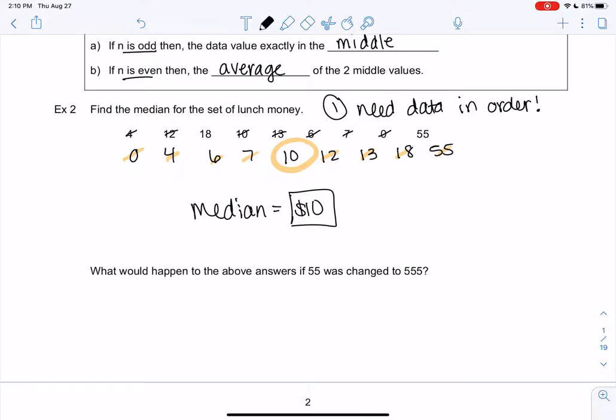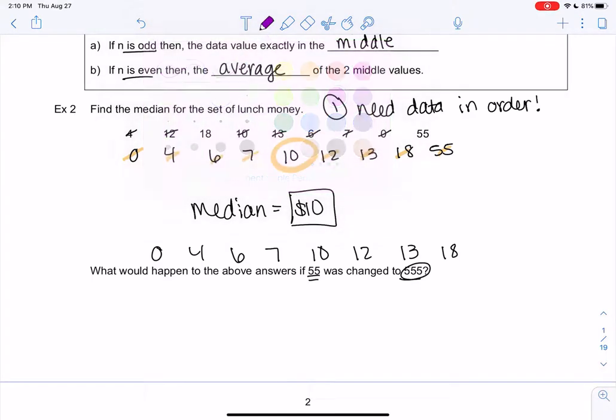So let's write those numbers out one more time. I'm just going to write them right here: 0, 4, 6, 7, 10, 12, 13, 18. And then it says that friend with $55 is now super rich and generous and decides to bring $555. So what happens to the mean and the median? Do they change?